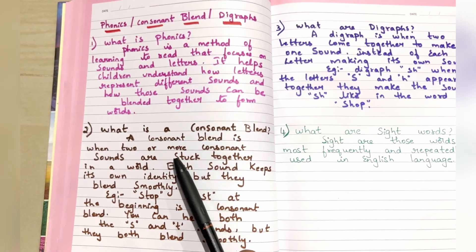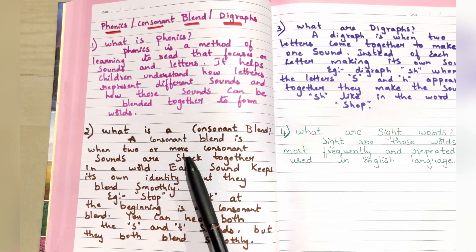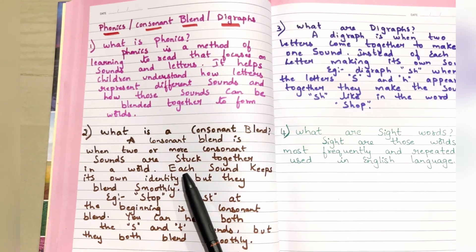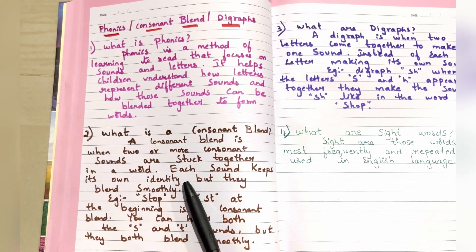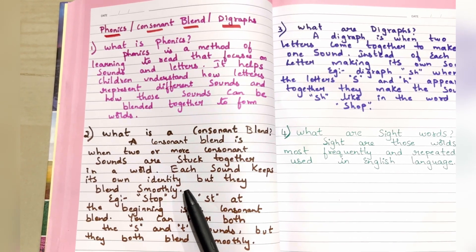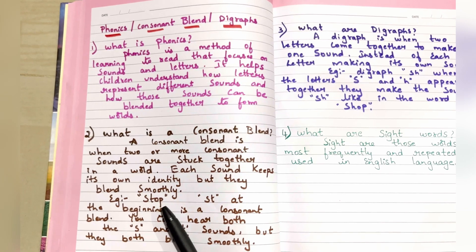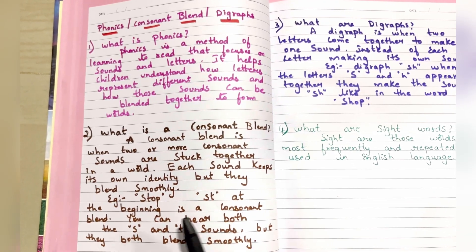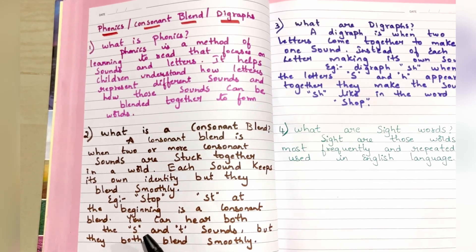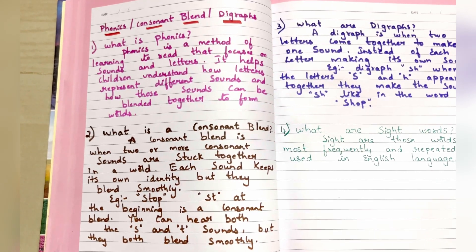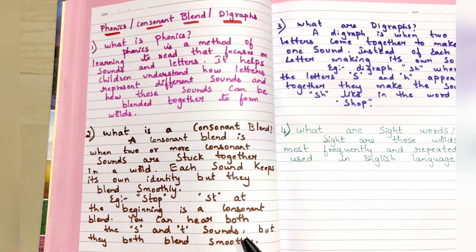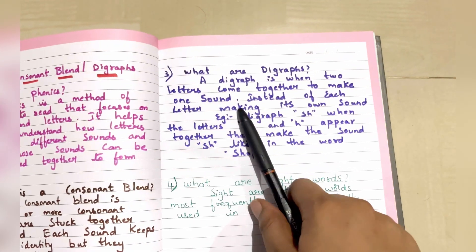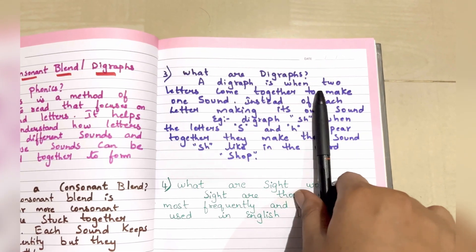What is a consonant blend? A consonant blend is when two or more consonant sounds are stuck together in a word. Each sound keeps its own identity but blends smoothly. For example, in the word 'stop,' 'st' at the beginning is a consonant blend — you can hear both the 's' and 't' sounds, but they blend smoothly as in 'stop.'